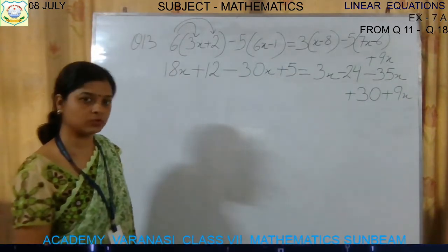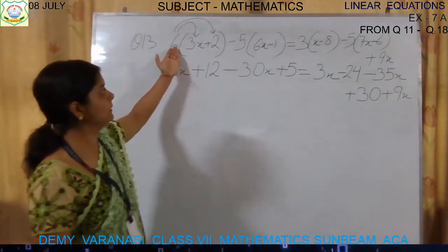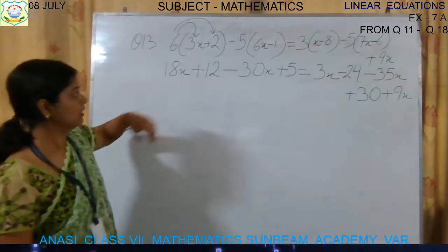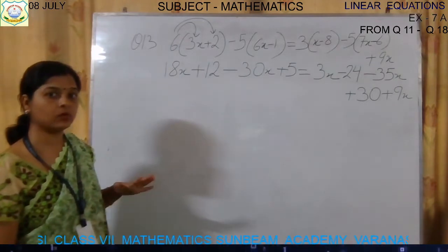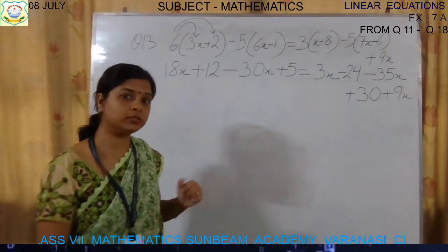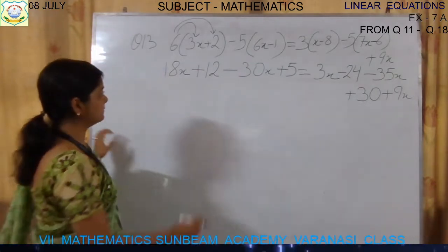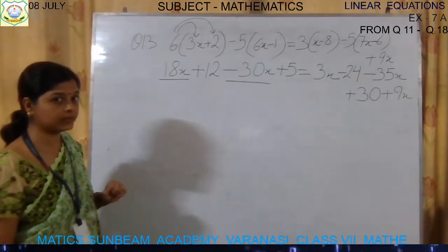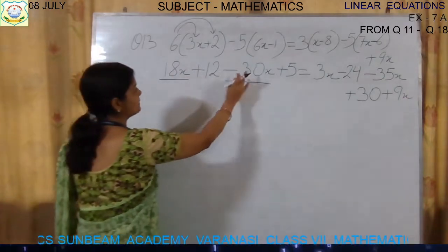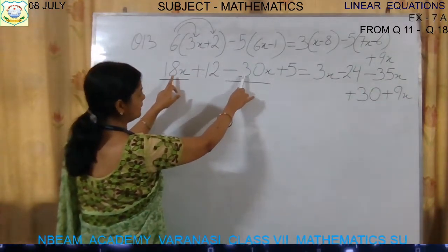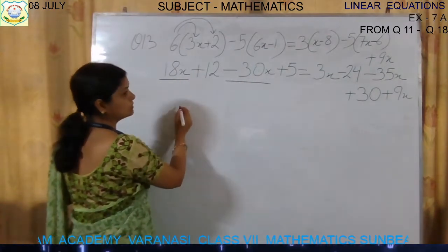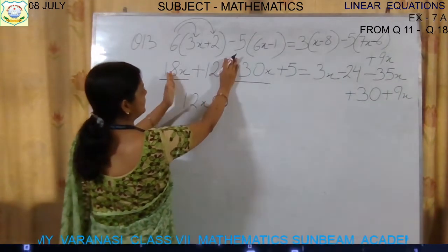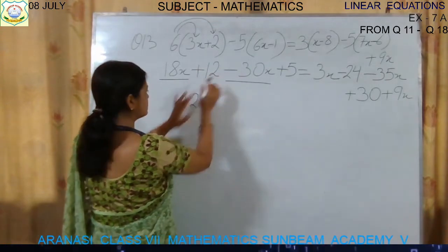I have opened the bracket one by one. Now, 18x minus 30x — both have x, so we can simplify them. One is positive, one is negative, so we subtract: 30 minus 18 is 12, and the sign of the bigger number (30, which is negative) gives minus 12x. Then 12 plus 5 gives 17.